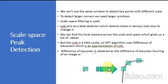For example, in the above image, Gaussian kernel with low sigma gives high values for small corners, while Gaussian kernel with high sigma values fits well for larger corners. So we can find the local maxima across scale and space, which gives us a list of values. This means there is a potential key point at x, y at that scale.